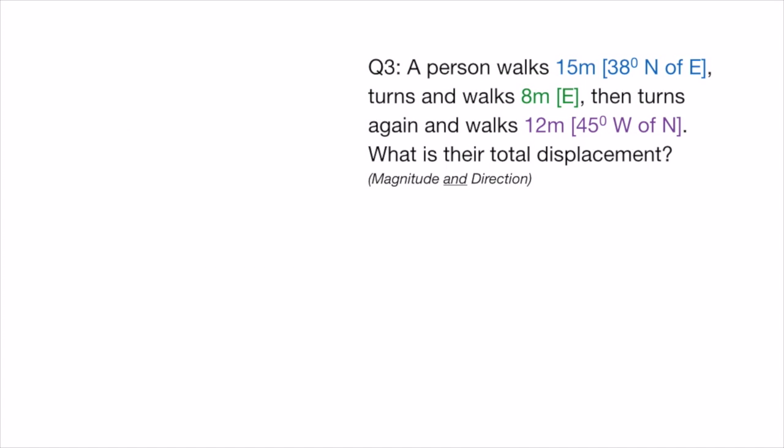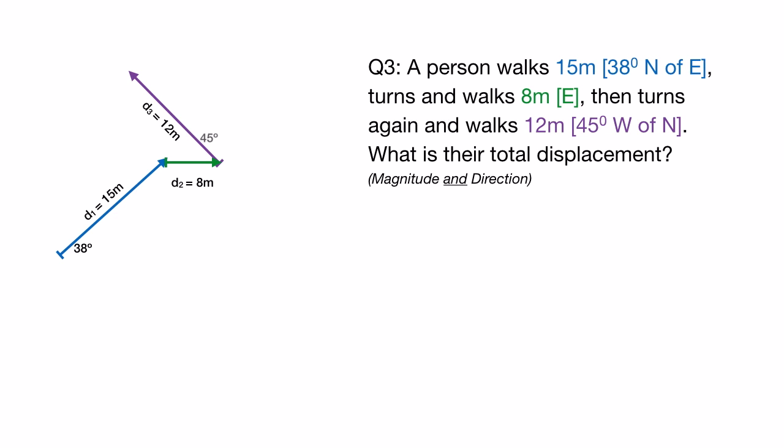In this problem we have a person that walks 15 meters at a direction 38 degrees north of east. He then turns and walks 8 meters directly east, then turns around again and walks 12 meters 45 degrees west of north, kind of backtracking a little bit. That will be important later. It's asking for the total displacement. Now remember displacement includes both magnitude and direction since it's a vector.